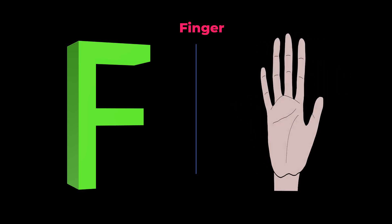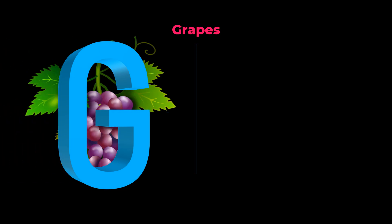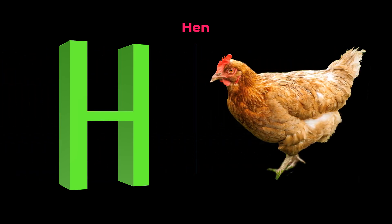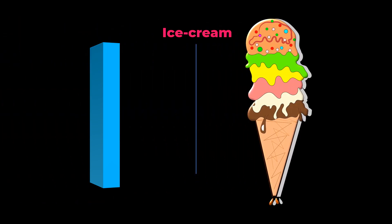F for Finger. G for Grapes. H for Hen. I for Ice Cream. J for Juggler.